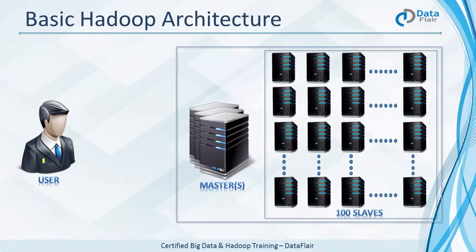Now let's talk about the basic Hadoop architecture. Hadoop works in a master-slave fashion. In a cluster we usually have very few masters — multiple masters exist for failover and high availability, so if your master goes down, a standby master automatically takes over. There can be thousands of slave nodes in the cluster.